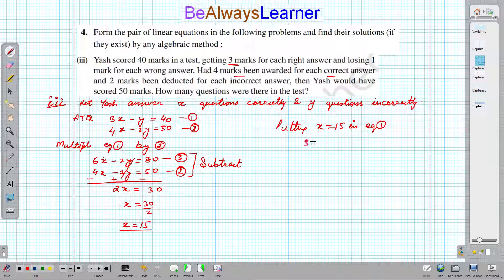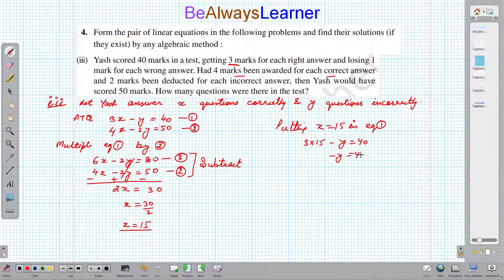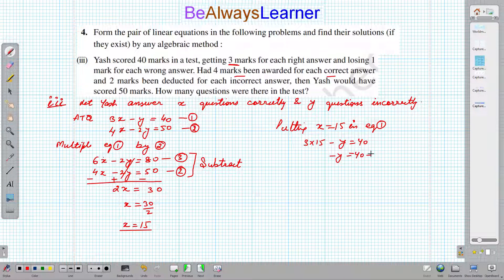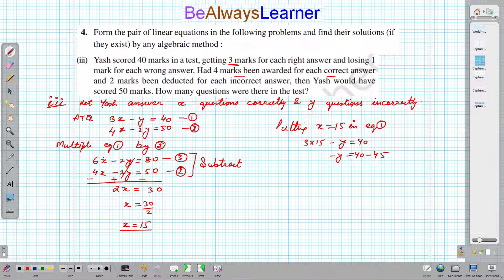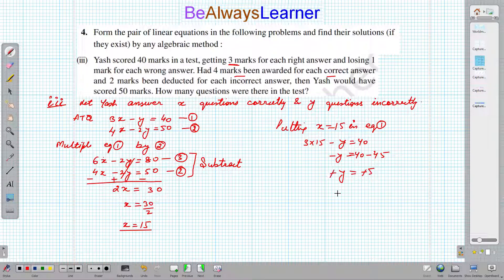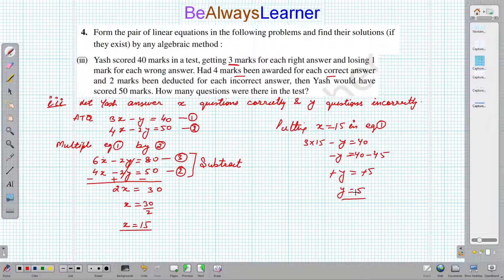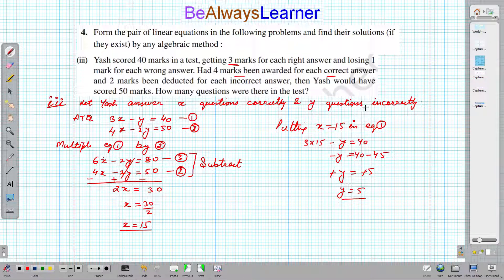Now putting x equals 15 in equation 1: 3 into 15 minus y equals 40. 45 minus y equals 40. Minus y equals minus 5. So y equals 5.